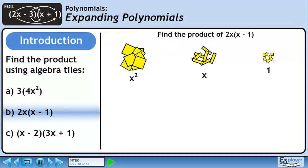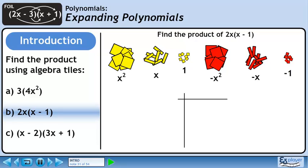In part b, we'll find the product of 2x and x minus 1. Since we are dealing with negative quantities in the product, let's make source piles for the red tiles. We represent 2x with two rectangles in the left column. We represent x minus 1 in the top row with a yellow rectangle and a small red square. Two yellow rectangles multiply together to yield a large yellow square. A yellow rectangle times a small red square is a red rectangle.